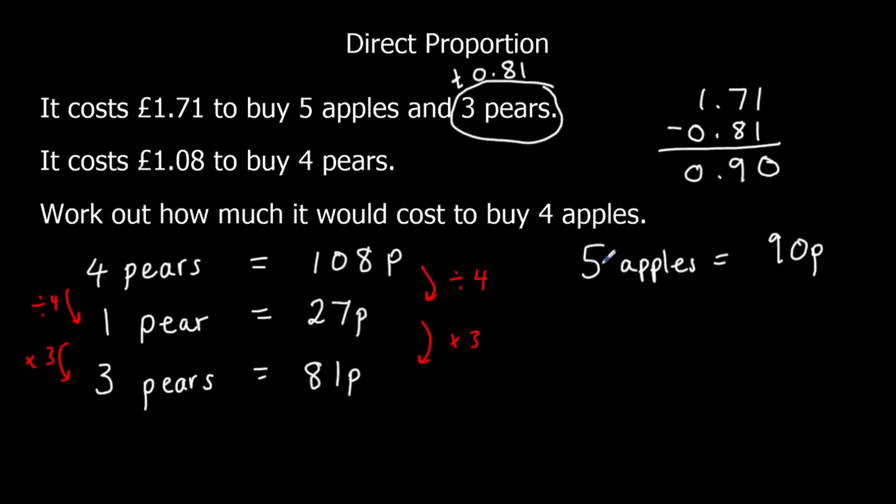I'm going to work out the cost of 1 apple. So divide by 5 both sides. So 90 divided by 10 is 9, double it, 18. So 1 apple is 18p.